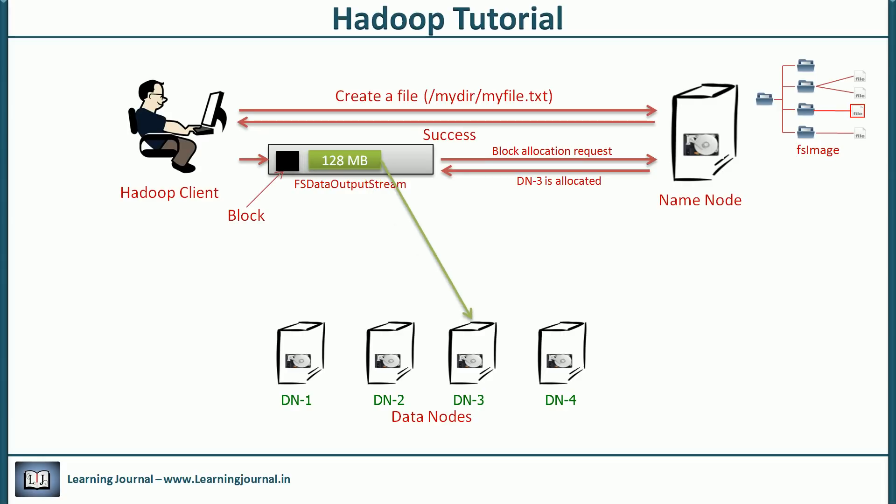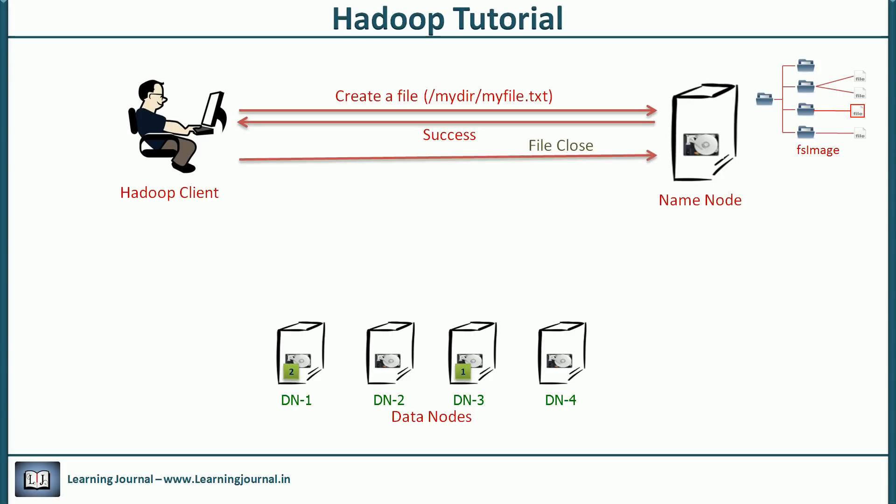If the file is larger than one block, the streamer will again reach out to name node for a new block allocation. This time, the name node may assign some other data node. So, your next block may go to a different data node. Once you finish writing to the file, the name node will commit all the changes. I hope you followed this process.